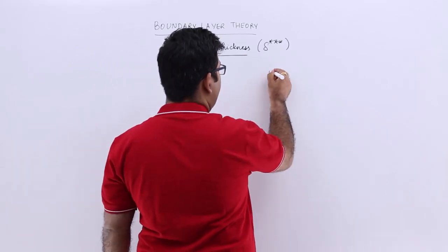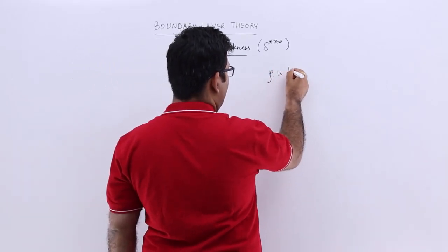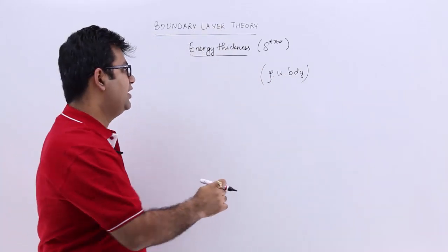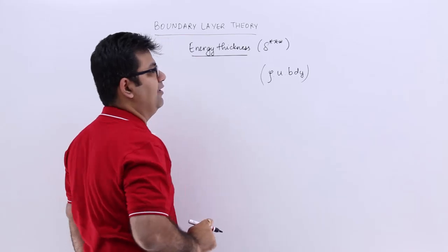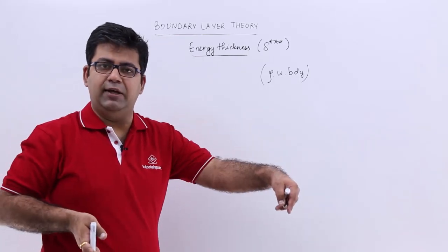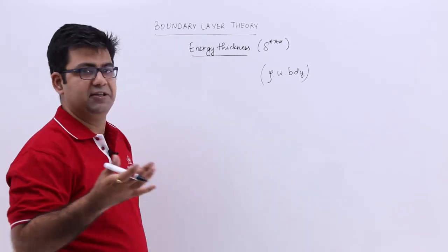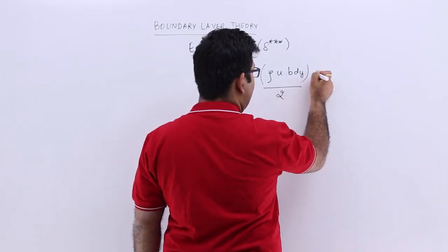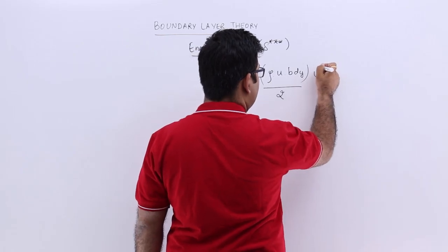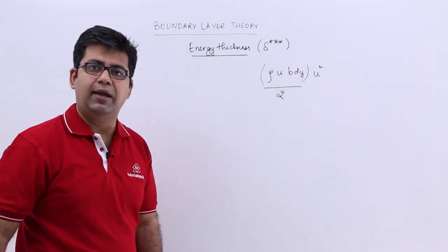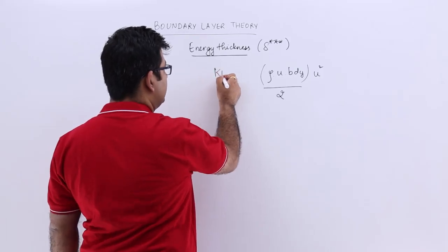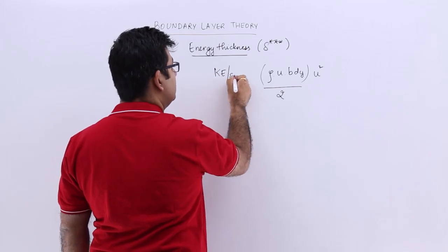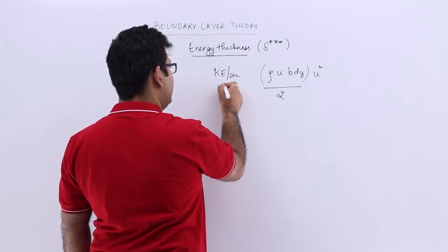The mass flow rate through a section at a distance y and of height dy is rho into u into b dy, where b is the width of the plate. If I divide this by 2 and multiply with velocity u squared, this becomes the kinetic energy per second within the boundary layer.